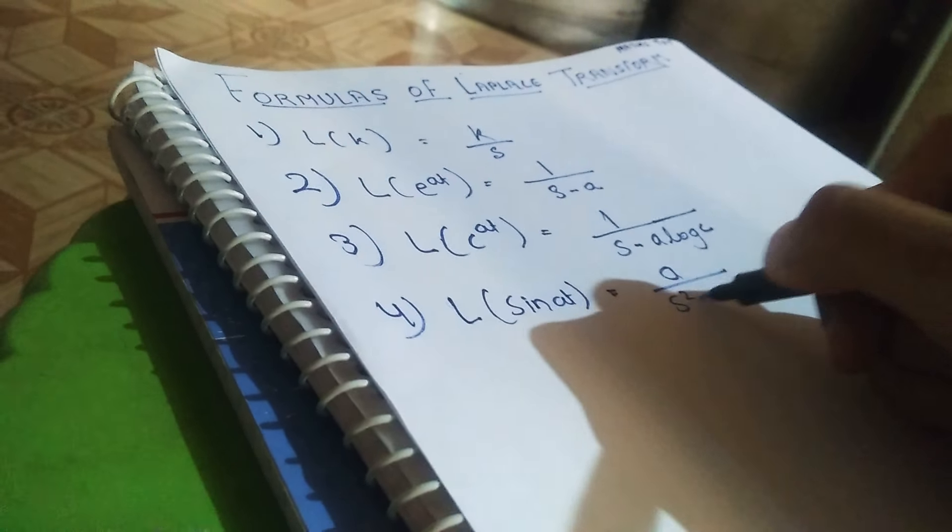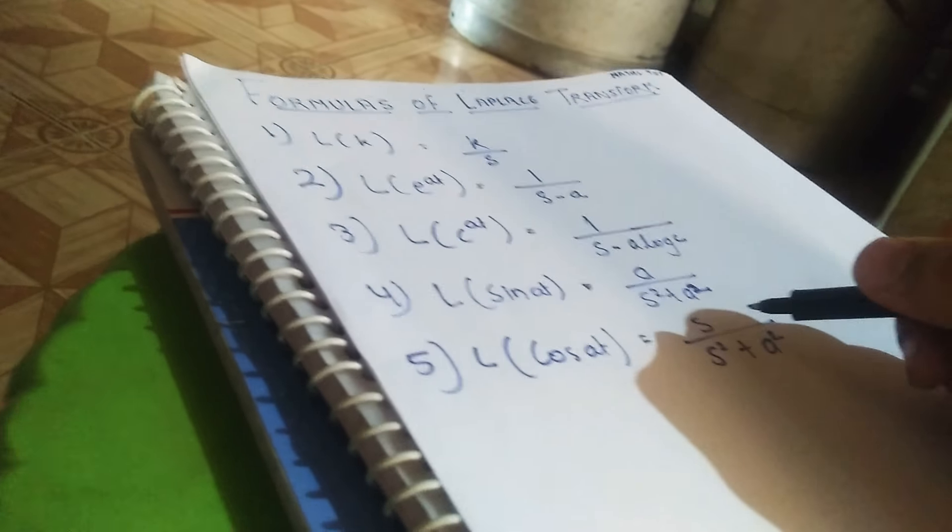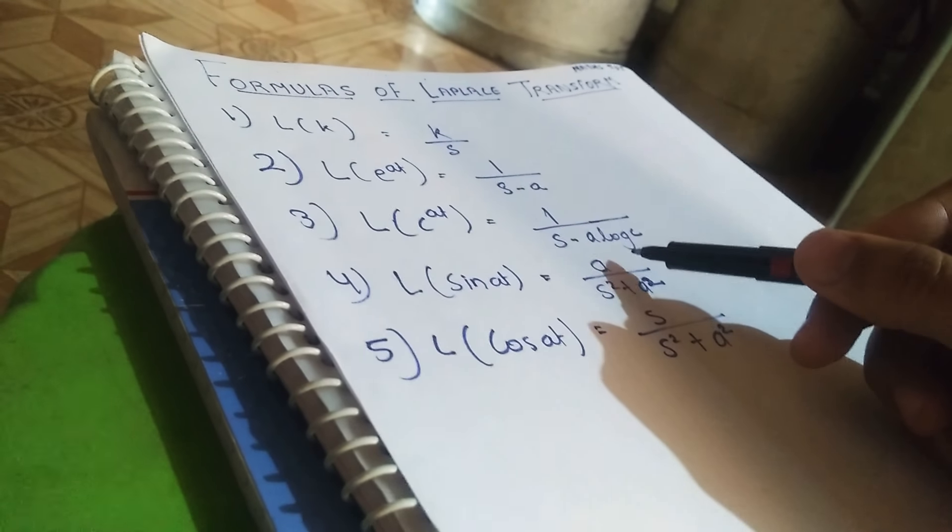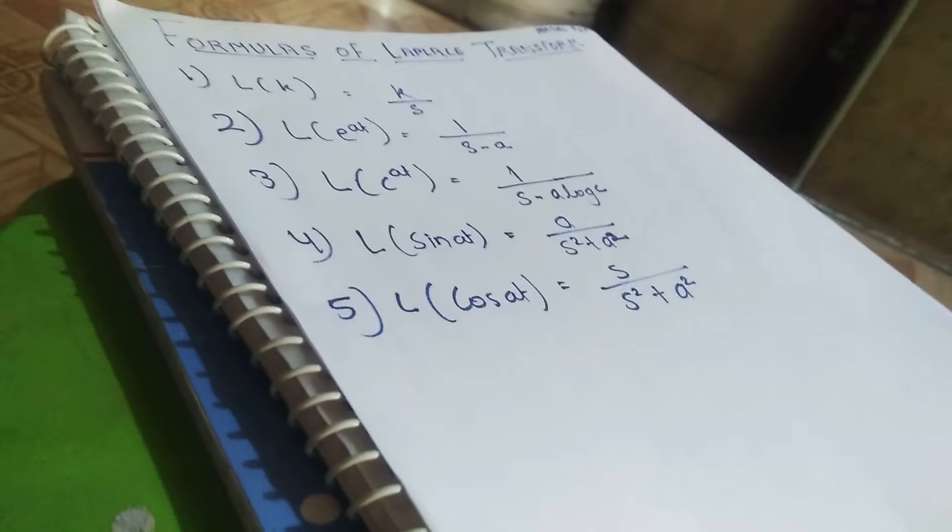Laplace of cos at: s by s square plus a square. In cos, in the numerator there would be s, or in sine in the numerator there would be a, and the denominator is the same.